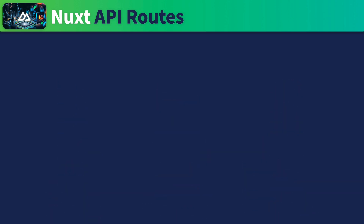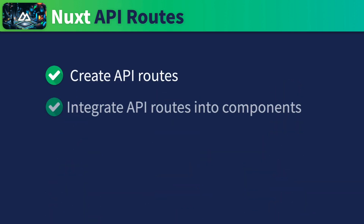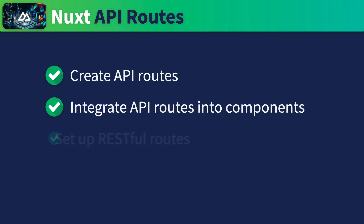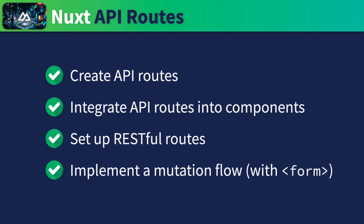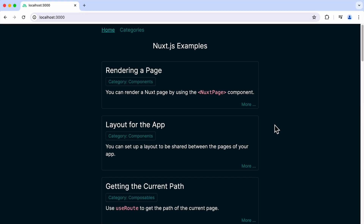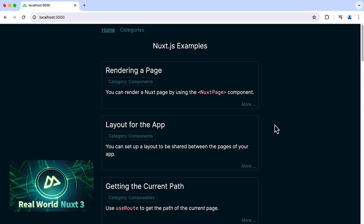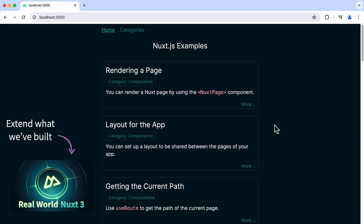We'll cover how to create API routes, integrate them into components, set up RESTful routes, and implement a mutation flow that connects the frontend and backend. We'll be learning all of these topics by working on a sample application. If you've taken our real-world Nuxt 3 course, this app and its codebase will be very familiar to you. We'll be extending onto what we built in that course.